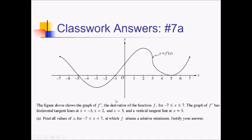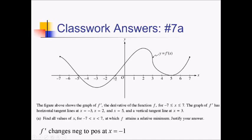On this free response problem, we're given the graph of f prime between negative and positive seven. We're told we have horizontal tangent lines at negative three, two, and five, and a vertical tangent line at x equals three. For the first part, they want to know where f attains a relative minimum. If you're looking for relative mins on f, you're asking where f prime changes from negative to positive. f prime changes negative to positive in only one spot: at x equals negative one. Therefore, f has a relative min at x equals negative one.